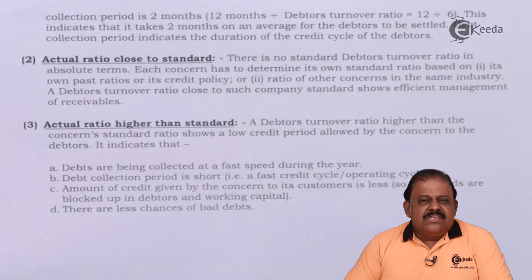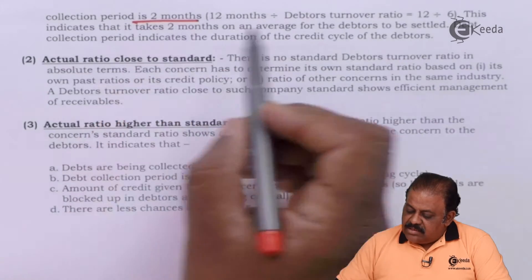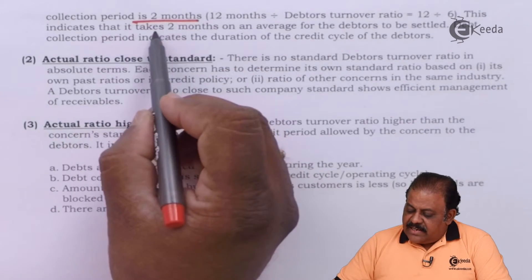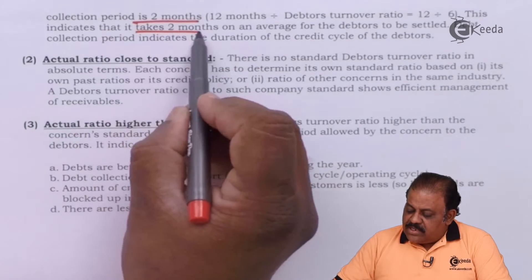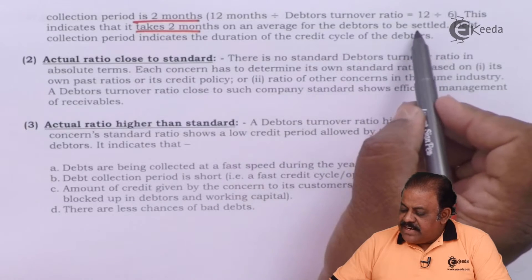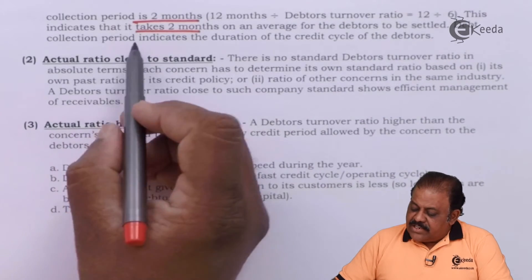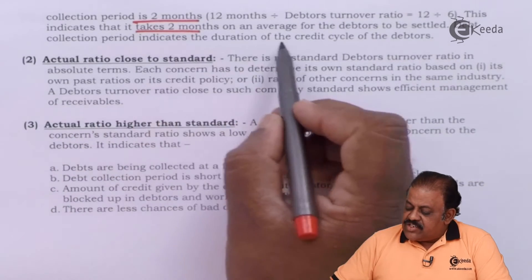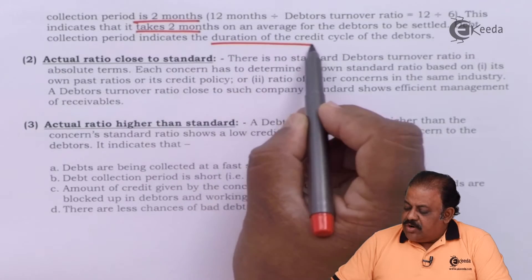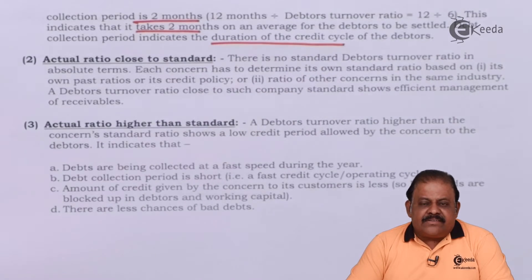It helps to work out the debt collection period, that is debtors velocity. In the above example, debt collection period will be 12 months divided by debtors turnover ratio 6, that is 2 months. This indicates that it takes 2 months on an average for the debtors to be settled. Debt collection period indicates the duration of the credit cycle of debtors.